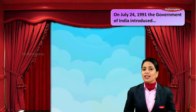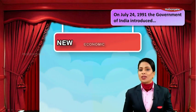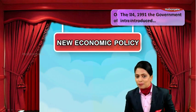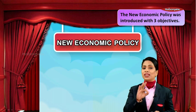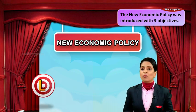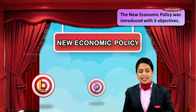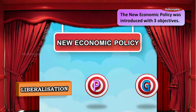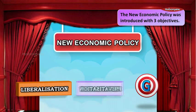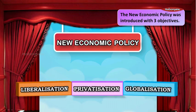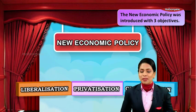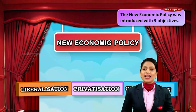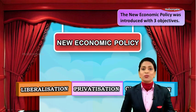On July 24, 1991, the Government of India introduced the New Economic Policy, keeping in mind three objectives. The first objective was L, the second was P, and the third was G. L stands for Liberalization, P stands for Privatization, and G stands for Globalization. In the coming modules of this lesson, we shall understand each one of them beautifully.